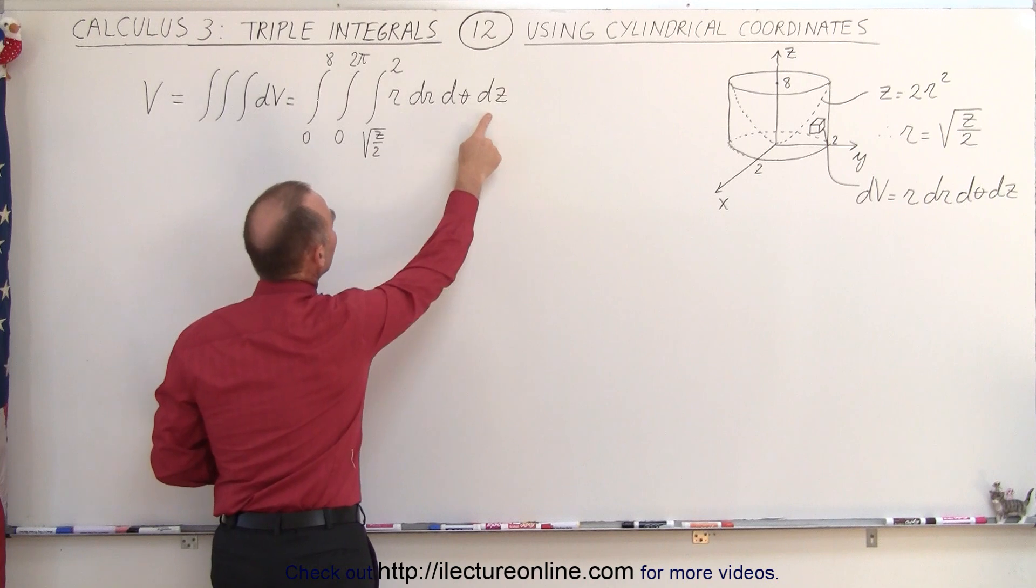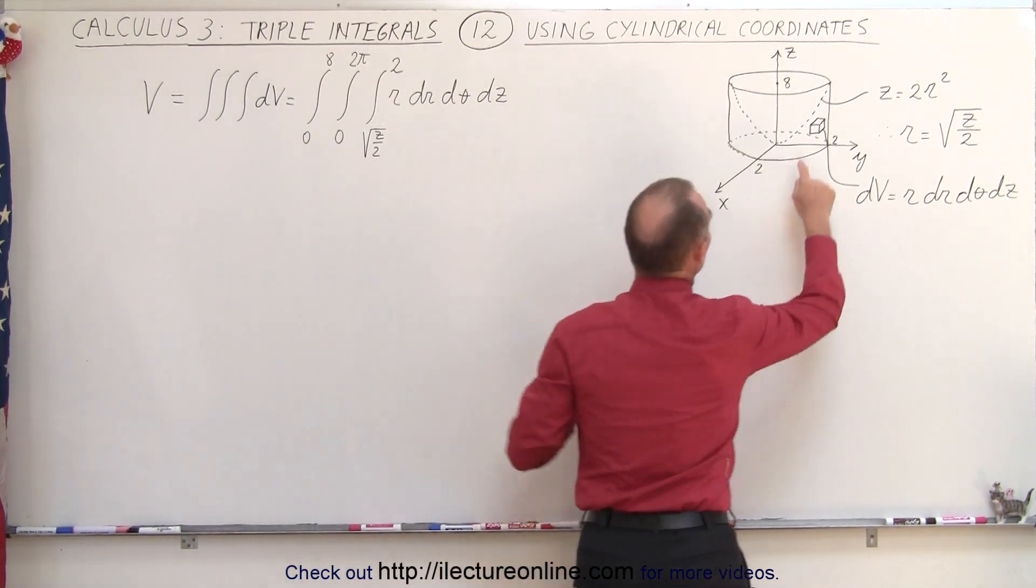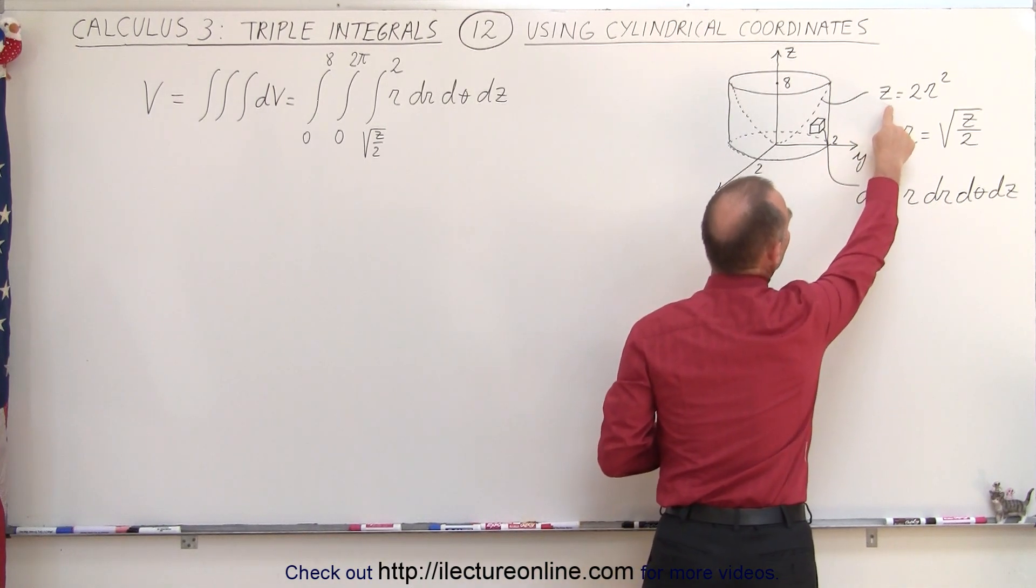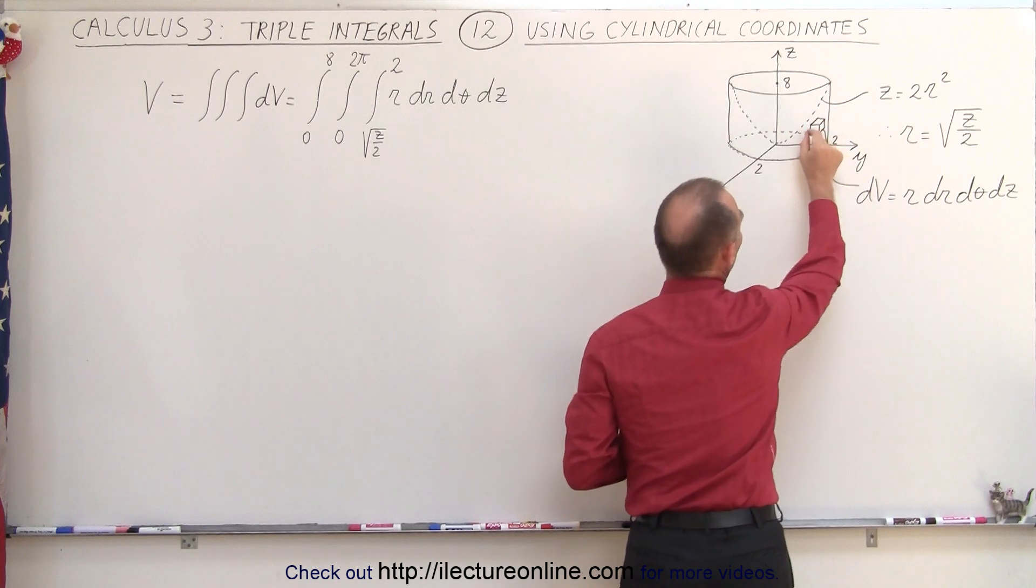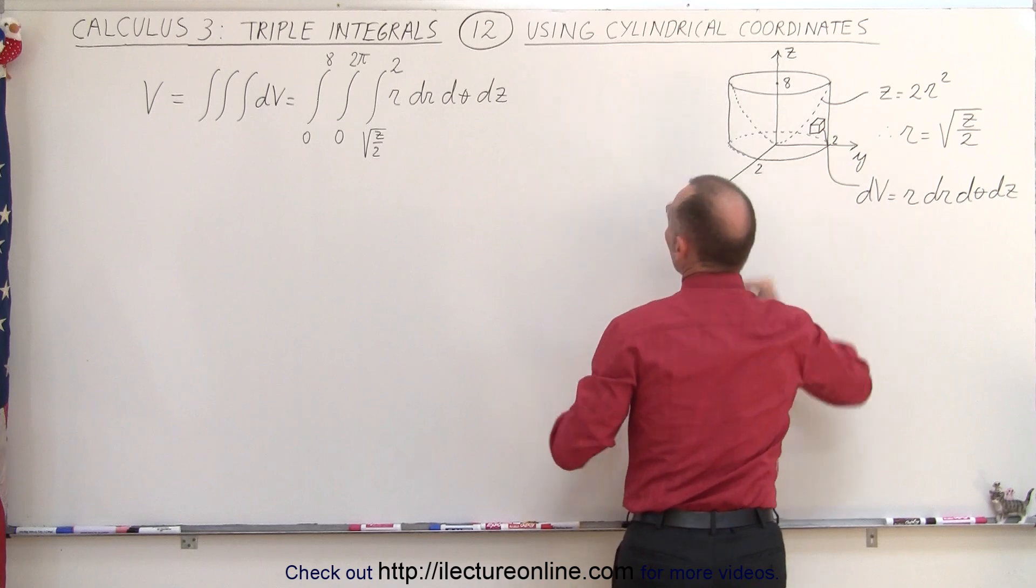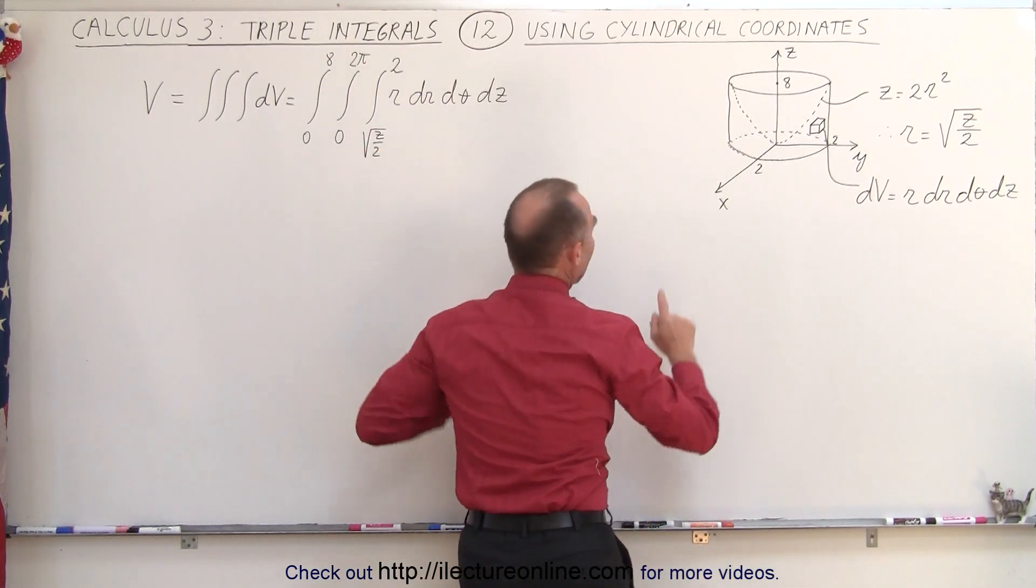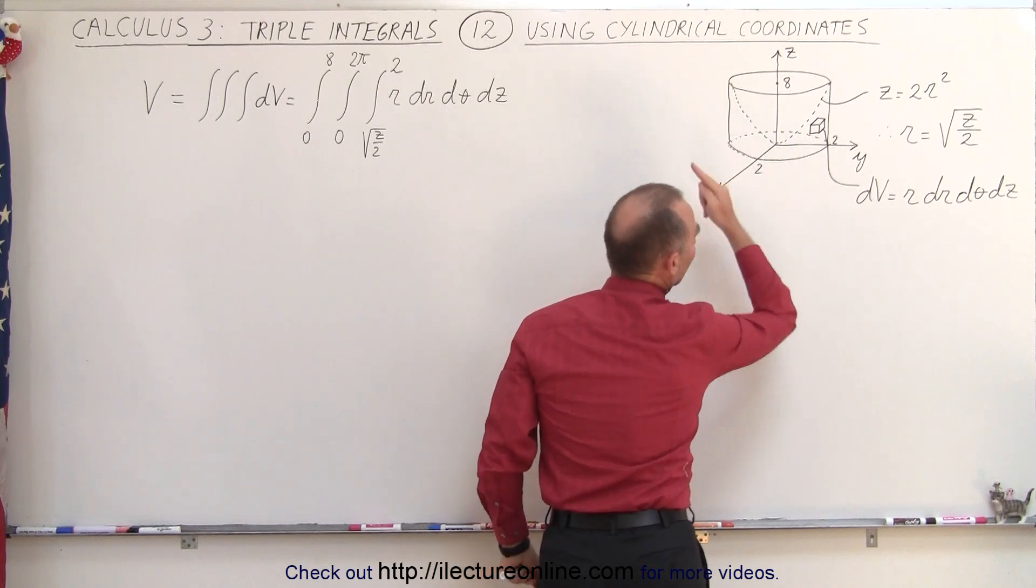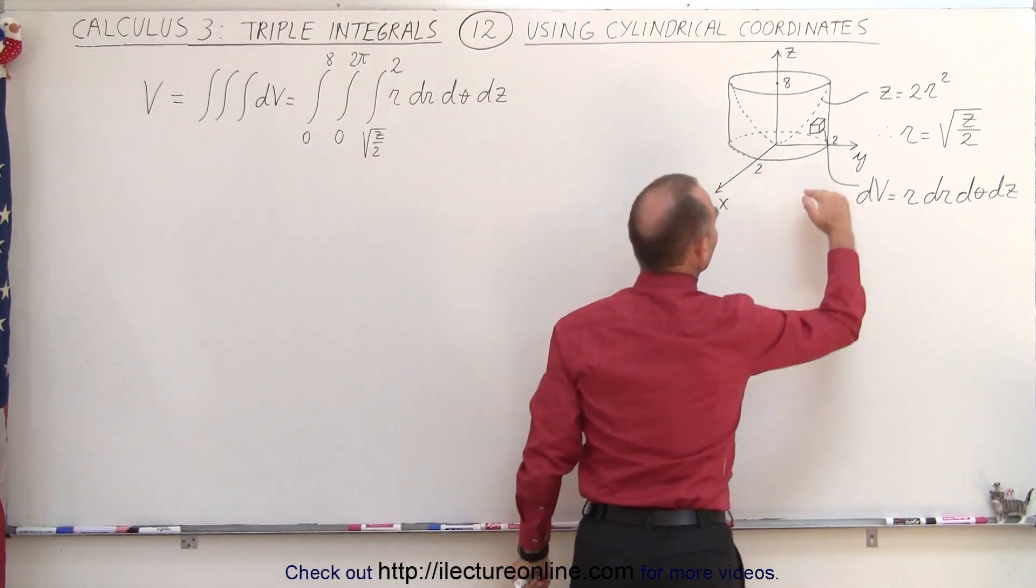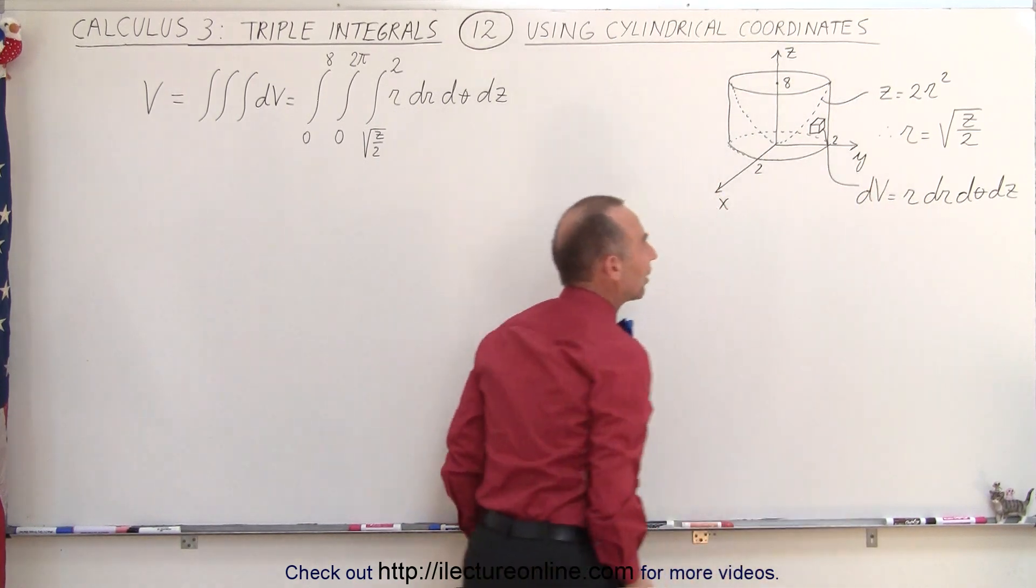r, θ, and z. The r limits are going to be from the square root of z over 2, because that's what we find r to be when we relate this to the original equation of the edge here. So we're integrating from the edge to the edge of the cylinder, from the inside edge to the outside edge, so from the square root of z over 2 to 2. For the angle, we're going to integrate all the way around the cylinder, from 0 to 2 pi, and for the height from 0 to the top height, which is 8. When r is equal to 2, z is equal to 8.